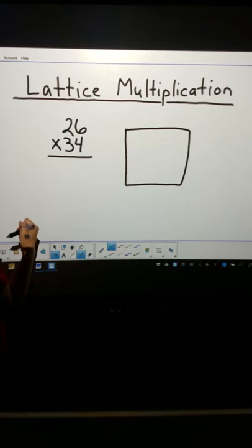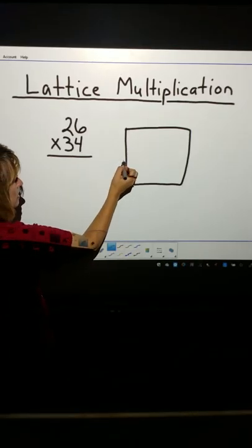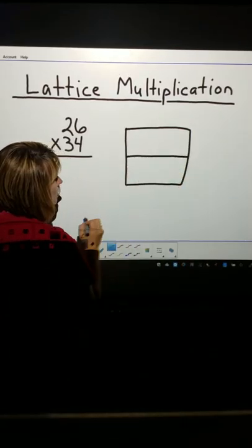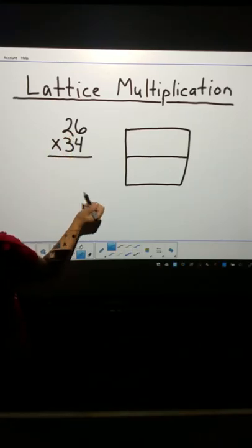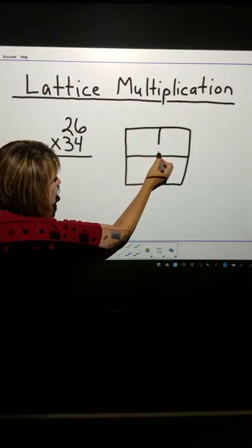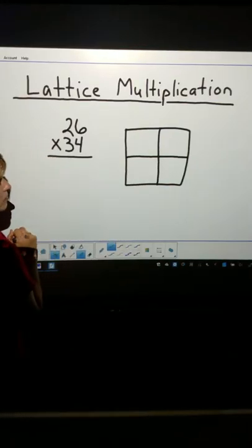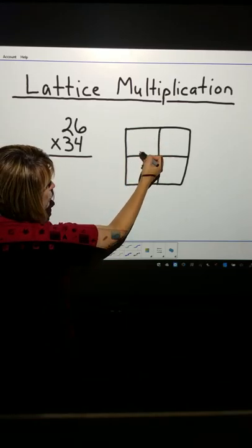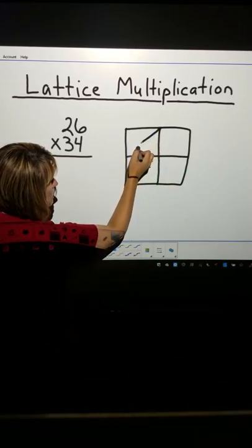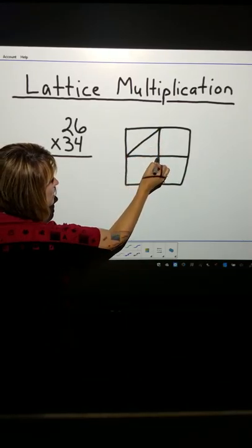Because there are two numbers, a top and a bottom, divide equally horizontally into two sections. There are two digits each, so divide equally into two sections vertically. Now, divide each section, each box within my grid, from top right to bottom left, diagonally.